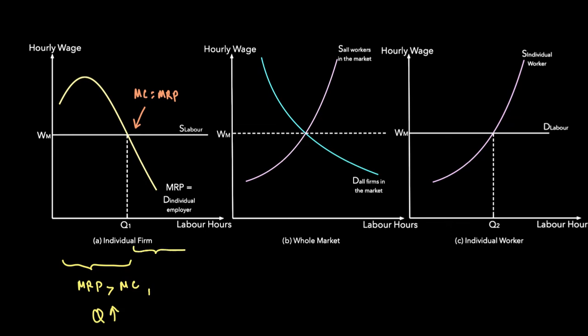Beyond Q1, MRP is less than MC, which means we should employ fewer workers because every additional worker adds more to cost than to revenue — marginal profit is negative. Only when MC equals MRP is profit maximized. So from an employer's perspective, profit maximization occurs at the point where MC equals MRP.